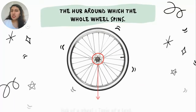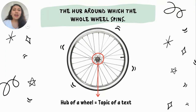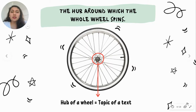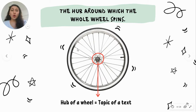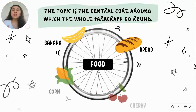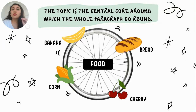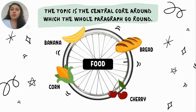Think about the topic as the hub around which the whole wheel spins — the topic being the hub of the wheel, the thing here in the middle of the circle, the red circle, and the text being the whole wheel. So the topic is the central core around which the whole paragraph goes round.